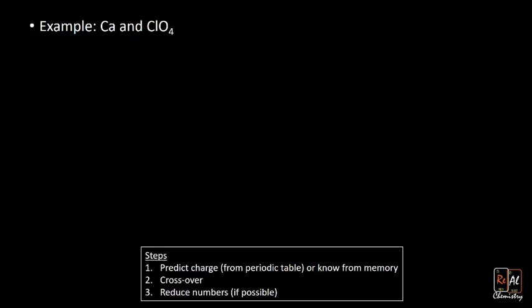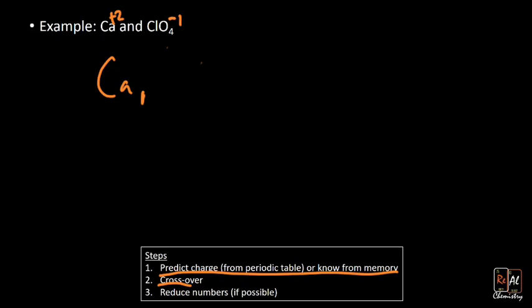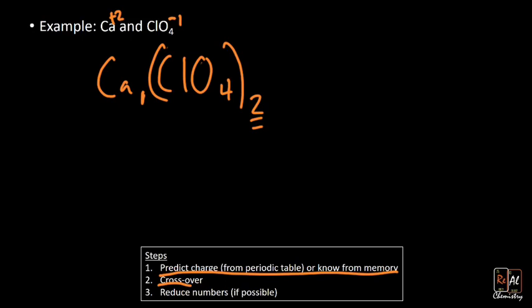Now let's do one with a polyatomic ion: calcium and perchlorate (ClO4⁻). Calcium is +2 from the periodic table. ClO4 is all one polyatomic ion with a -1 charge that you memorize. We cross over and get Ca1(ClO4)2. Some people might write ClO2, but that's wrong — that changes the polyatomic ion entirely. We need two whole ClO4 units, so we use parentheses: Ca(ClO4)2. The subscript two outside the parentheses means two complete perchlorate ions.